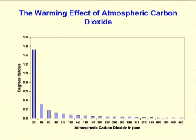Anthropogenic warming is real. It is also minuscule. Using the MODTRAN facility maintained by the University of Chicago, the relationship between atmospheric carbon dioxide content and increase in average global atmospheric temperature is shown in this graph. The effect of carbon dioxide on temperature is logarithmic, and thus climate sensitivity decreases with increasing concentration. The first 20 ppm of carbon dioxide has a greater temperature effect than the next 400 ppm.